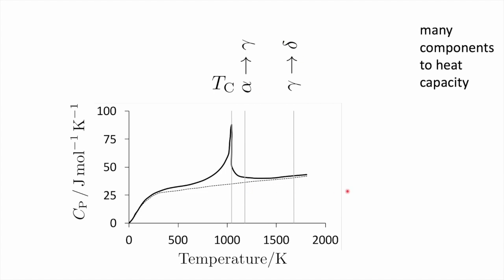There are of course phase transitions as the temperature rises. Notice that even after the ferromagnetic-to-paramagnetic transition there is excess heat capacity, because short-range magnetic order persists even above the Curie temperature. There can be many other components to heat capacity — for example, there is a very small component from electrons in the material. It's small because only the electrons near the Fermi surface can actually change their energies, whereas for lattice vibrations all particles can change their energies as temperature increases.